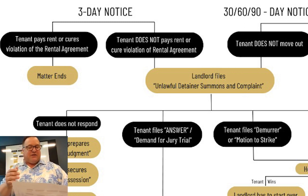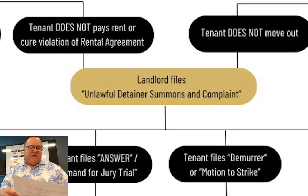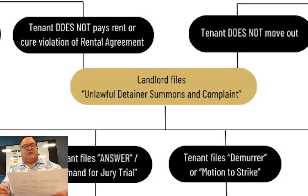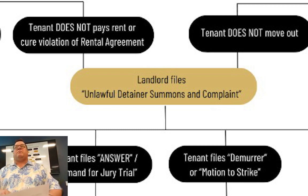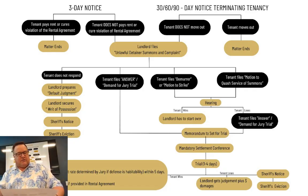If the tenant does not pay, we jump down to landlord files unlawful detainer — summons and complaint. At this point, this is usually what people mean when they say we're going to file an eviction. This is the actual eviction. We take a package — the lease, the ledgers, how much is owed, all the notices that we've given — put that administrative package together, and send it over to our attorney.